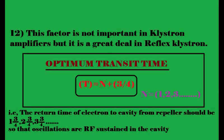This transit time factor is not important in klystron amplifiers since there is no feedback present. However, in the reflex klystron, the repeller electrode acts as feedback. The optimum transit time is given by: T = n + 3/4, where this represents the return time of electrons to the cavity from the repeller space.